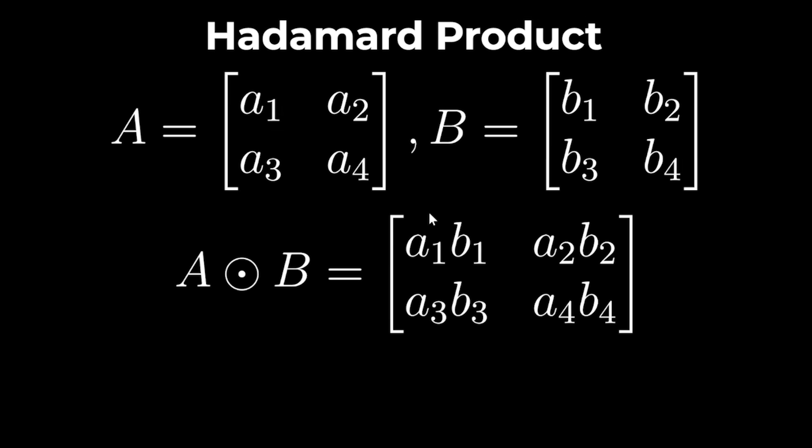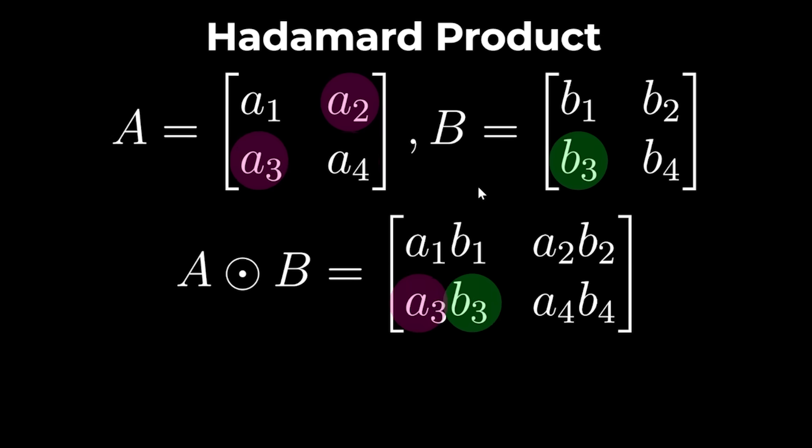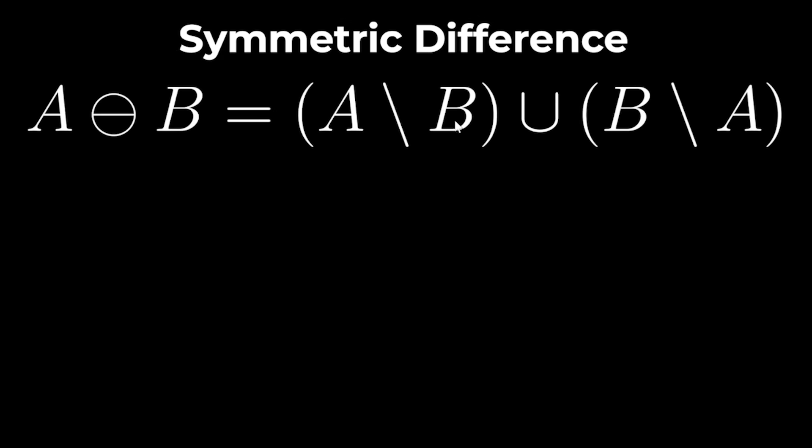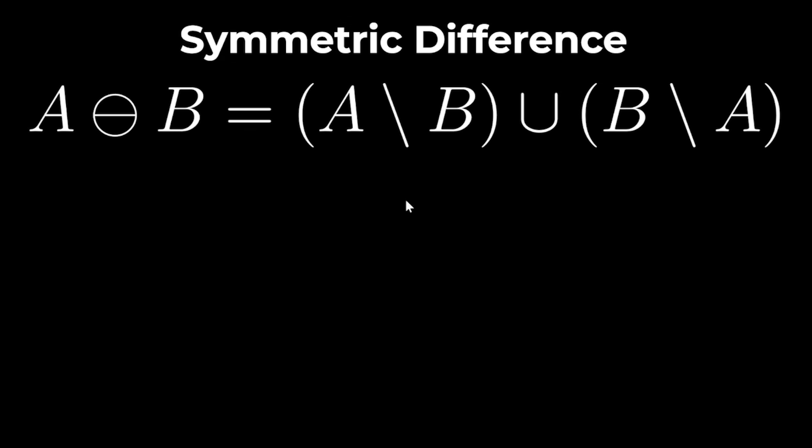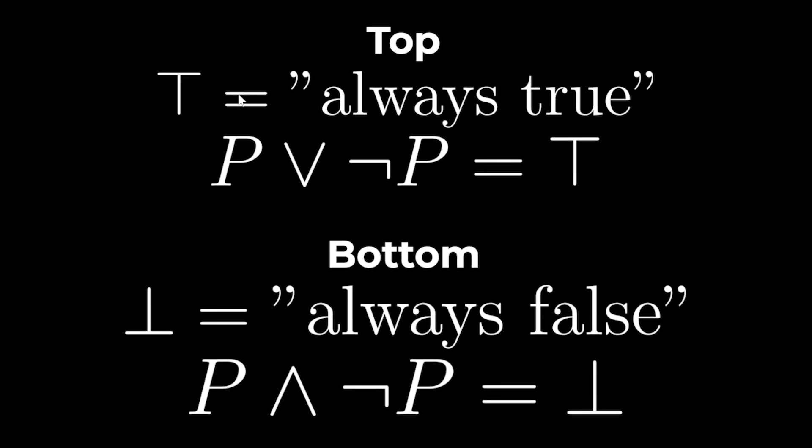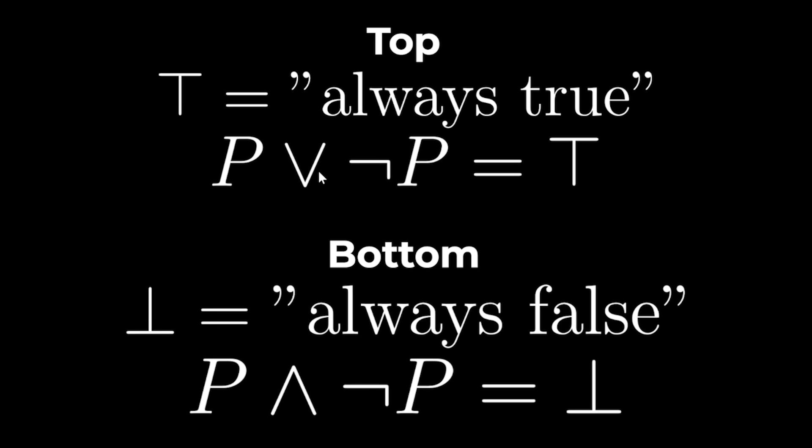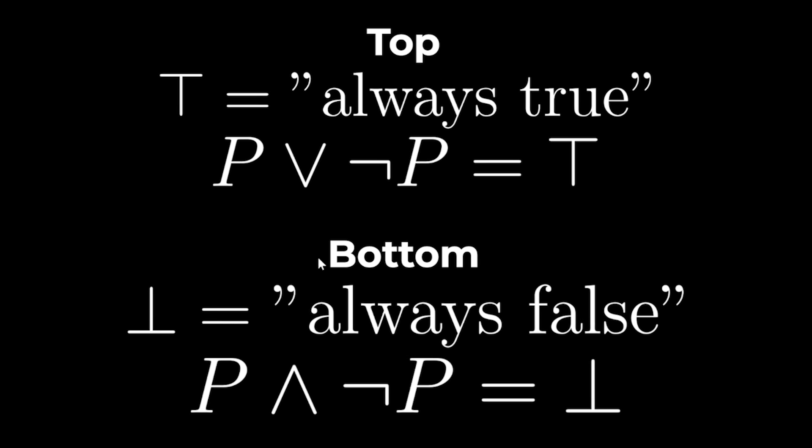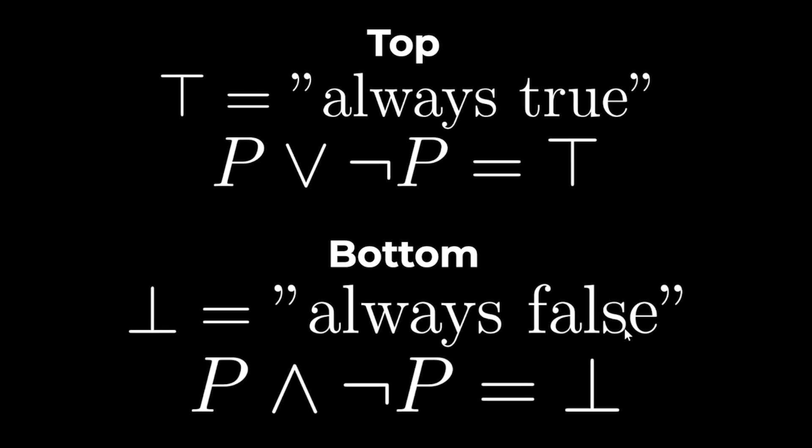If A and B are matrices, then the Hadamard product of A and B is just the element-wise product of each element in the matrix. The symmetric difference of A and B is A subtract B union B subtract A, and it looks like this. The top symbol is used to mean always true, for example P or not P is always true, and the bottom symbol means always false, for example P and not P is always false.